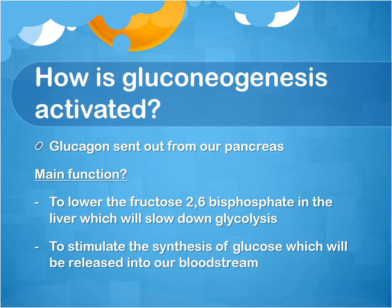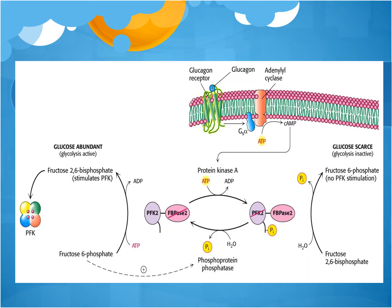There are two main functions to this process. The first one is to lower the fructose 2,6-bisphosphate in the liver, which will slow down glycolysis. The second function is to stimulate the synthesis of glucose, which will be released into our bloodstream. I want to briefly talk about this regulation that occurs when glucagon is present in our body.